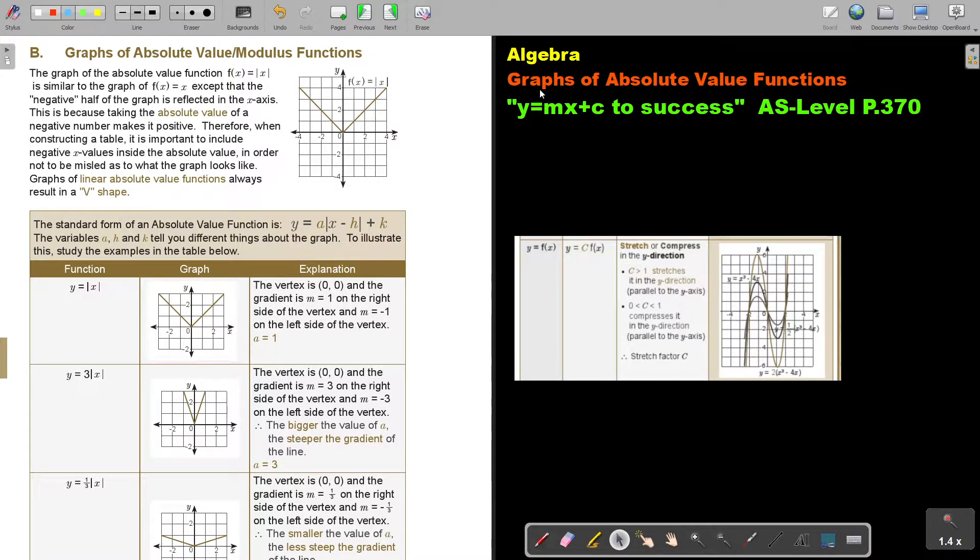In this video, we will look at graphs of absolute value functions. You will find this on page 370 in the Namibia AS level mathematics textbook y equals mx plus c to success.